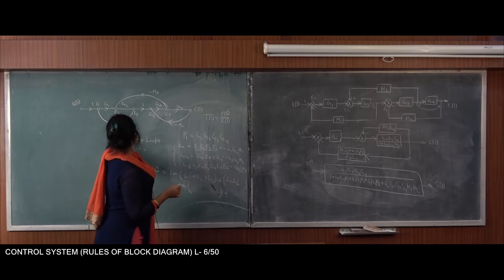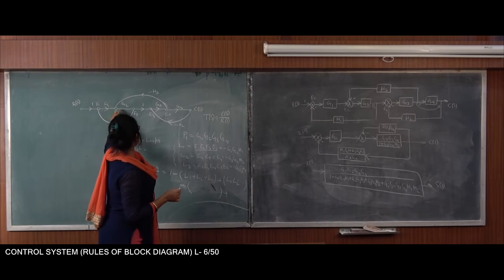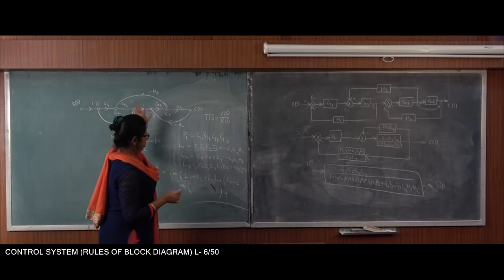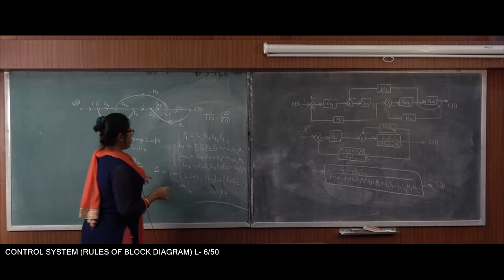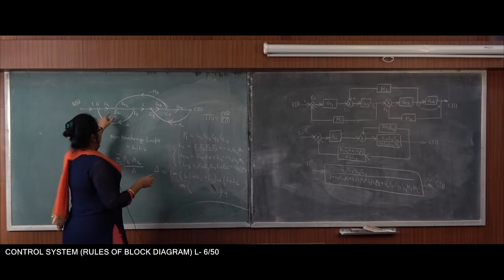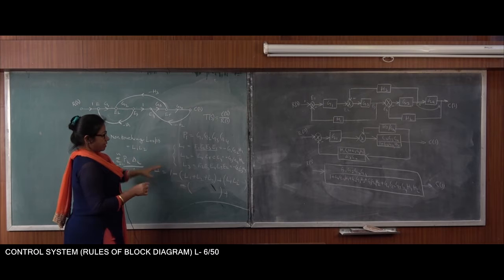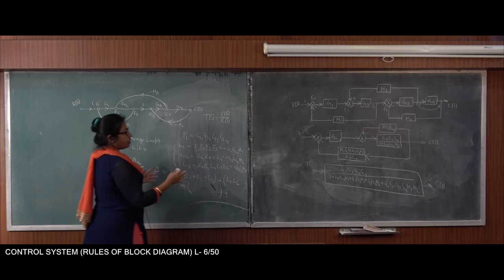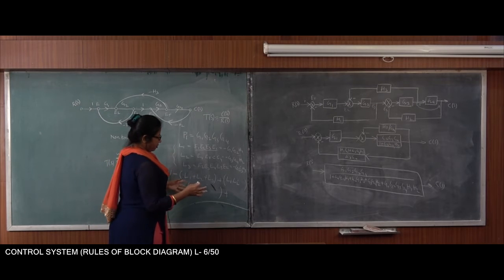If I take L1 and L3, they would actually be touching — going through this node — so we will not take that. And here, three non-touching loops are not there.